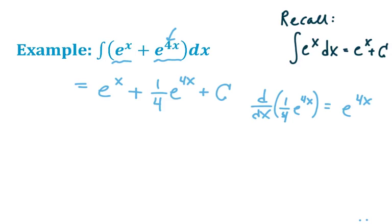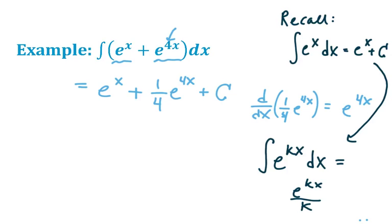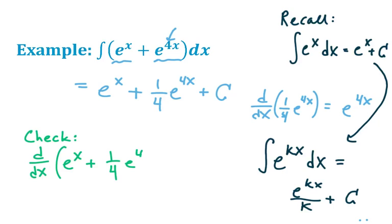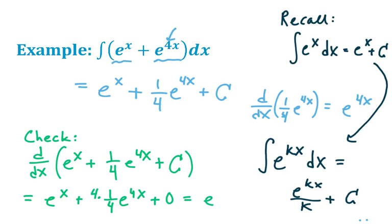We tag on the constant of integration. This prompts a useful generalization: the integral of e to the kx, where k is a constant, equals e to the kx divided by k, plus c. As a quick check, the derivative of e to the x plus one-fourth e to the 4x plus c gives back e to the x plus e to the 4x — via the chain rule on the exponential — confirming our result. That's a brief review of working with trig functions, log functions, and exponential functions.